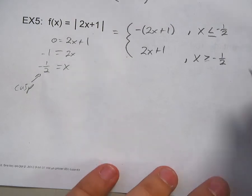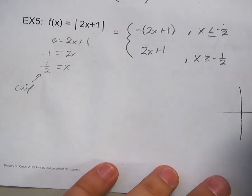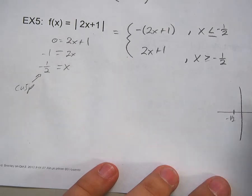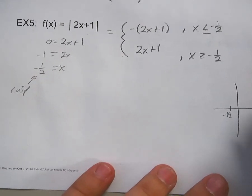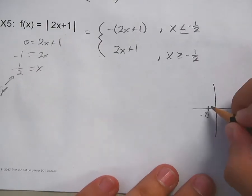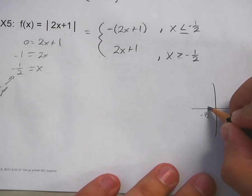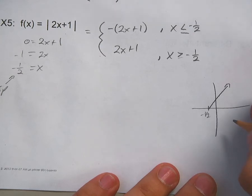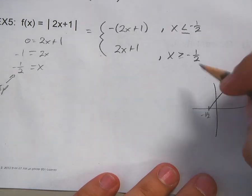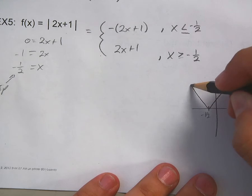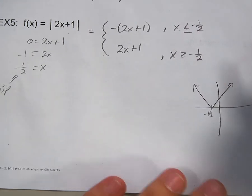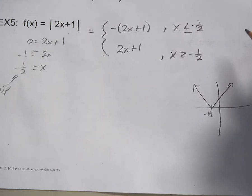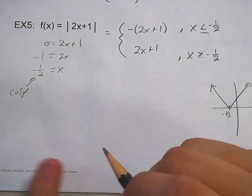The graph of the piecewise looks something like this. Here's negative one half. It never dips below the x-axis because it's all inside the absolute value. So it's going to be a positive two over one going up on the right, and a negative two over one going down on the left. There's the graph.